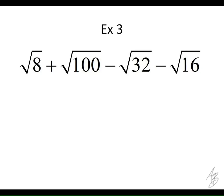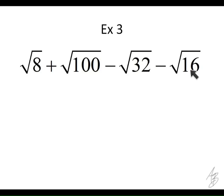Just like the last problem, what do you think the first thing we're going to do is? Since none of the radicands are the same right now, we can't combine them — so what can we do? We are going to have to factor some of them. Let me ask: will we need to factor this one? It's a perfect square, right? Since 100 is a perfect square — 10 times 10, 10 squared — we don't have to do the factor tree. And 16 is a perfect square also, so we don't have to do the factor tree. Since 8 and 32 are not perfect squares, we'll have to factor those.